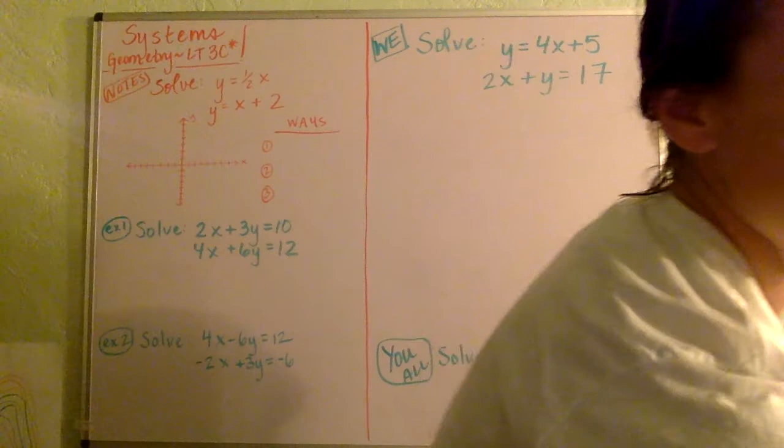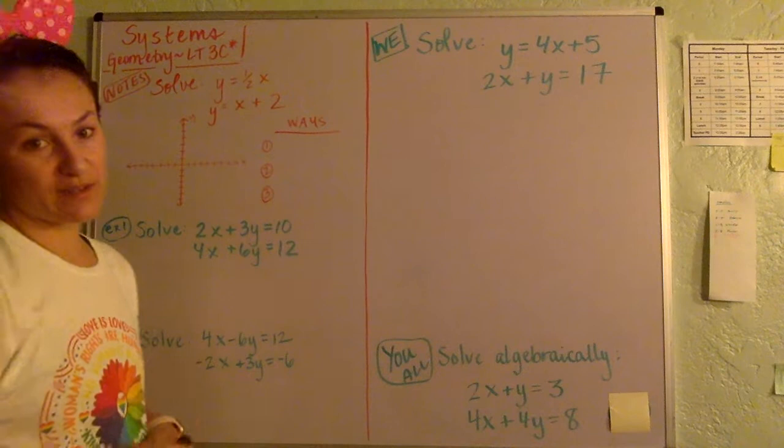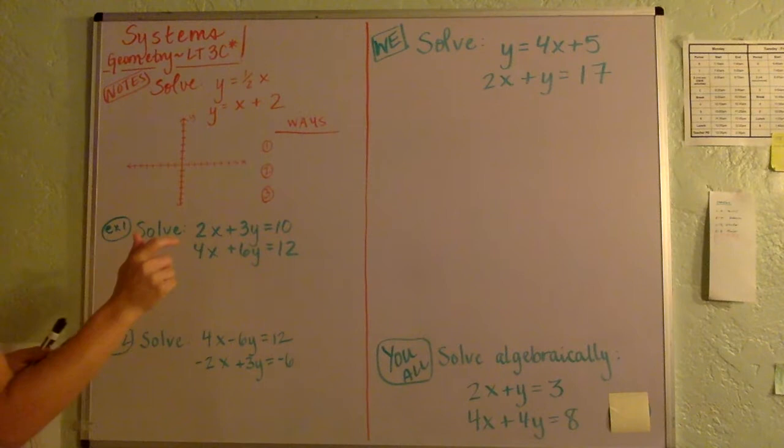A little Algebra 1 standard just to get us going into our next concept. So let's just remember all the ways that you can solve a system. A system, remember, you're going to be given two lines. The two lines are the system.